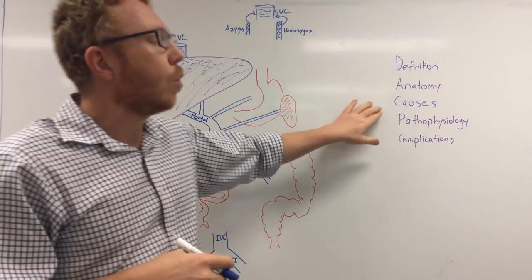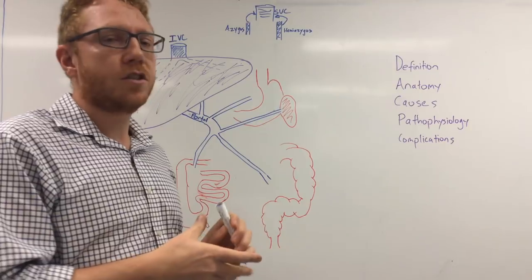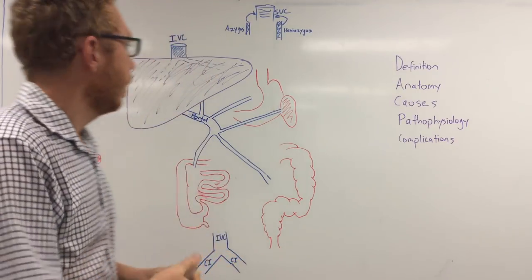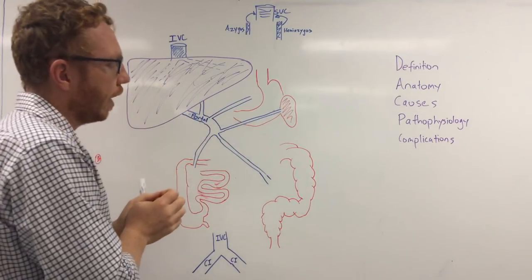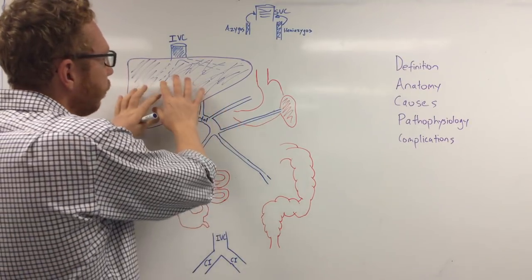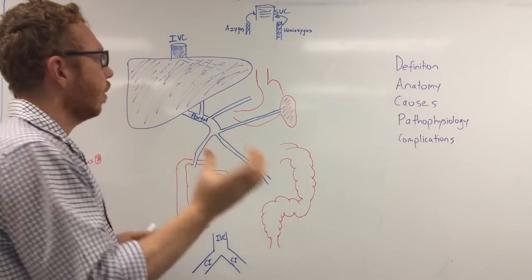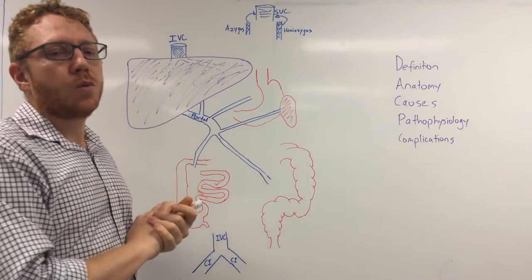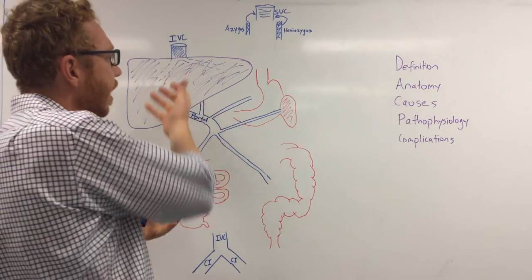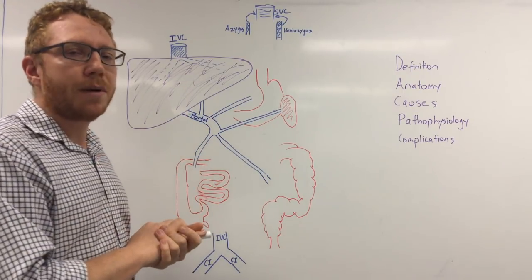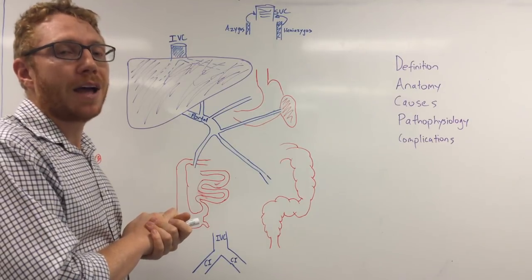Now we'll cover the causes in a second, but firstly let's look at the anatomy. The portal vein is the venous drainage of the gut which moves into the liver. It approaches the liver from behind and goes into the hilum of the liver, which we call the porta hepatis. It brings two-thirds of the blood into the liver, in conjunction with the hepatic proper artery.